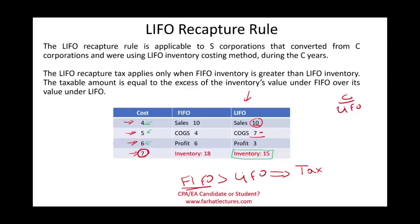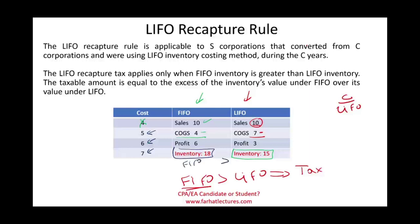Now if this company is using FIFO: sales are $10 minus $4, giving a profit of $6. After selling the $4 item, what's left in inventory is $5, $6, and $7. Adding them up, inventory under FIFO is $18. Notice that FIFO inventory ($18) is greater than LIFO inventory ($15), so we have a LIFO recapture tax situation.